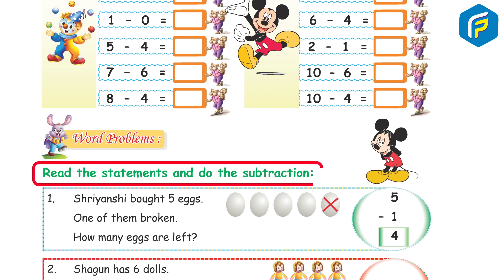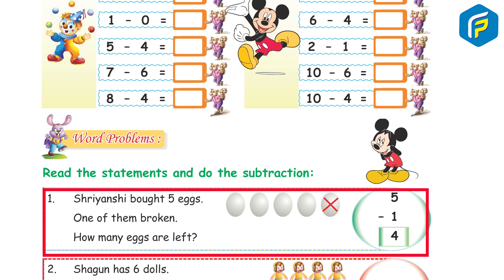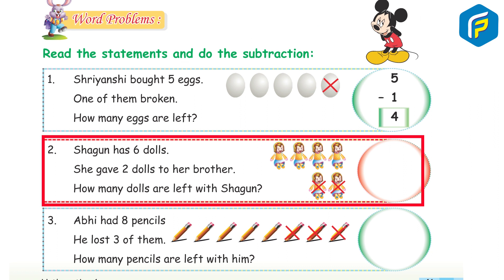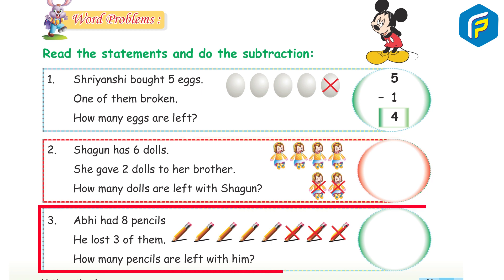Word problems: Read the statements and do the subtraction. 1. Shriyanshi bought 5 eggs; one of them broke. How many eggs are left? 2. Shagun has 6 dolls; she gave 2 dolls to her brother. How many dolls are left with Shagun?